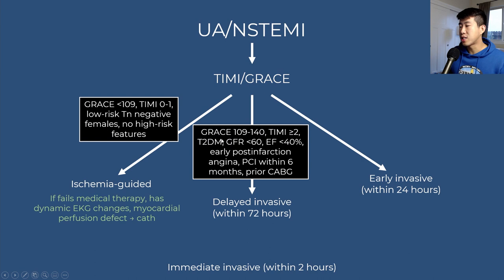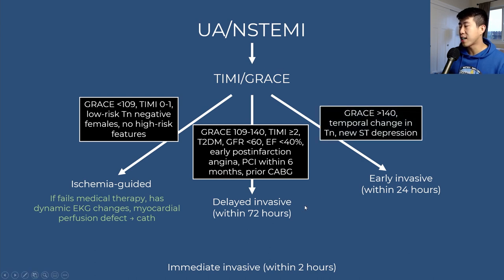For medium-risk patients with GRACE score 109-140, TIMI score ≥2, or other listed risk factors, choose a delayed invasive strategy with cardiac catheterization within 72 hours. For early invasive strategy candidates, these are higher-risk patients with GRACE score greater than 140, temporal troponin changes, or new ST depressions, going for catheterization within 24 hours.